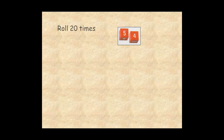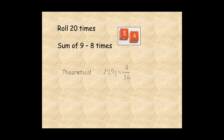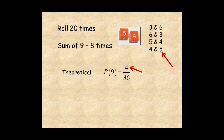In another experiment, a die is rolled 20 times, and the sum of 9 comes up 8 times. The theoretical probability is 4 chances out of 36, because there are 4 combinations that add to 9. And when rolling two dice, there are 36 possible outcomes. So 4 over 36 simplifies to 1 over 9.